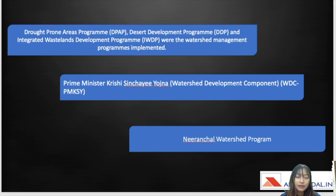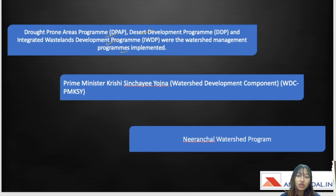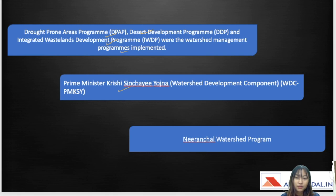This slide covers the programs and schemes for watershed management. The programs include the Drought Prone Area Program, the Desert Development Program, and the Integrated Wasteland Development Program. Try to remember their key features and implementation dates. The schemes under watershed development include Prime Minister Krishi Sinchaya Yojana and the Neeranchal Watershed Program, which was assisted by the World Bank as the National Watershed Management Project.